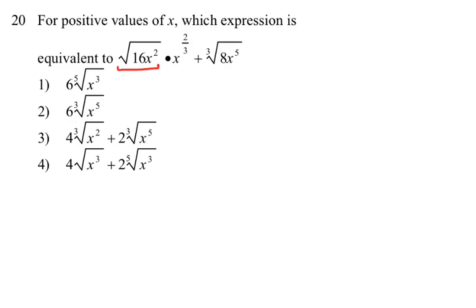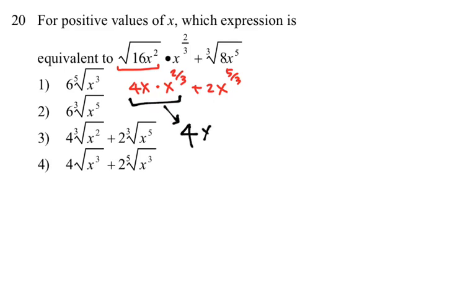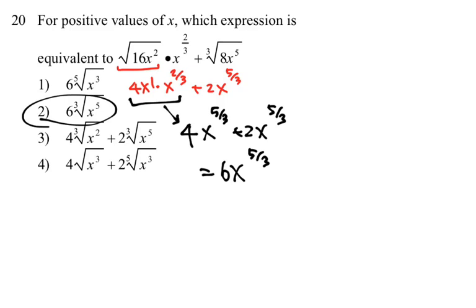Number twenty: rewriting the expression, we get 4x times x to the 2/3 power. The cube root of 8 is 2, and cube root of x⁵ gives x to the 5/3 power since the cube root adds an exponent of 1/3. Combining: 4 times x to the 5/3 plus 2 times x to the 5/3. The hidden exponent 1 plus 2/3 becomes 5/3, so combining gives 6 times x to the 5/3 power, which is choice 2. We'll stop here and continue in part 2.